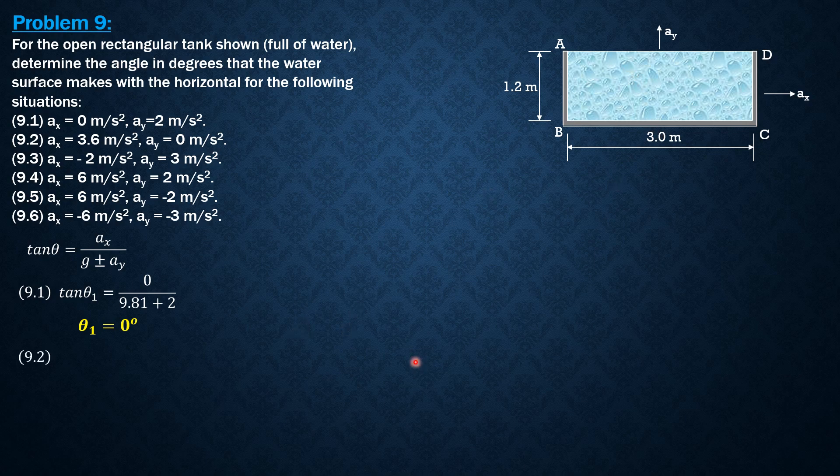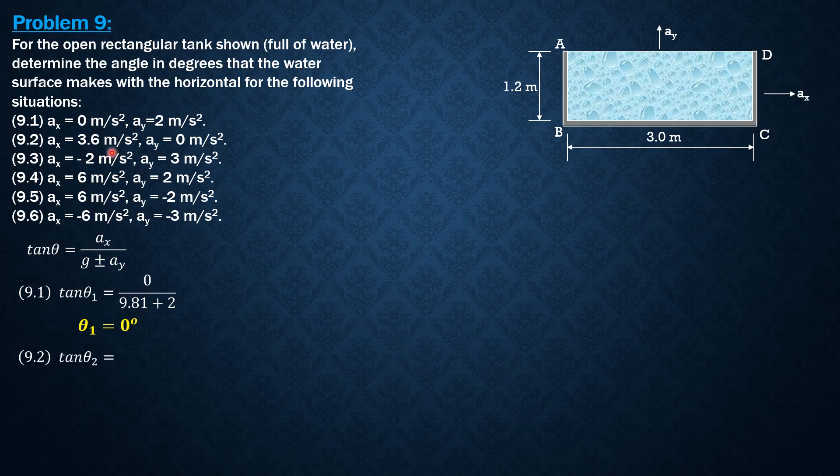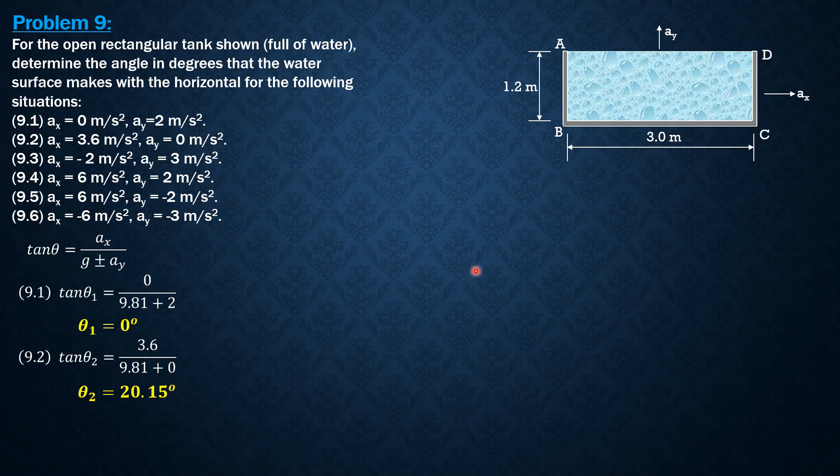Then tangent theta 2 is 3.6 over 9.81 plus 0. So this is the situation where we only have horizontal acceleration. So theta 2 is 20.15 degrees. It is sloping up to the left as shown in the figure. This is the resulting surface and this is theta 2.